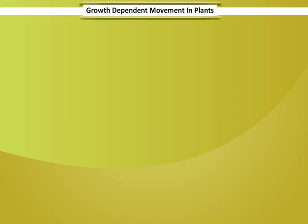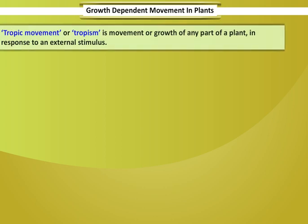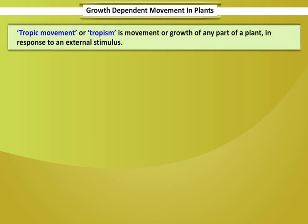Growth-dependent movement in plants. Topic movement or tropism is the movement or growth of any part of a plant in response to an external stimulus.